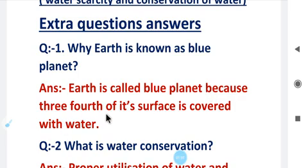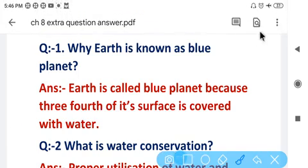Answer is: Earth is called blue planet because three-fourths of its surface is covered with water. Jo Earth ka three-fourths surface hai, three-fourths means three by four, so three by four surface jo hai wo water se covered hai. Means three by four pe water hi water hai. That's why Earth is known as blue planet. Clear.